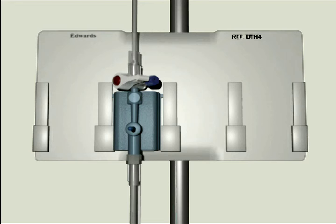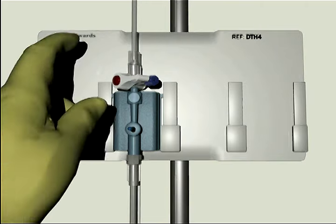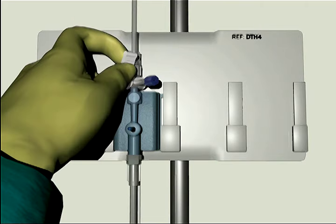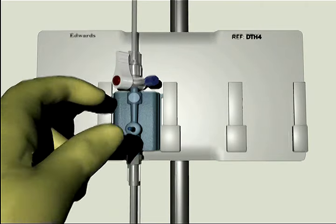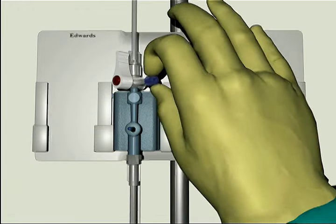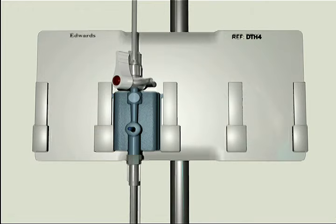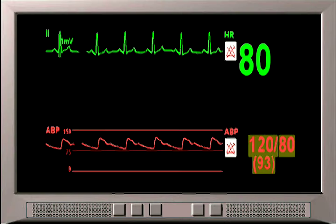The TruWave transducer must be zeroed to remove the effects of atmospheric pressure. Open the stopcock above the transducer to atmospheric air by turning the stopcock toward the patient's pressure tubing and away from the TruWave transducer. Then remove the non-vented cap. Perform this maneuver while maintaining sterility of the cap and the stopcock port.